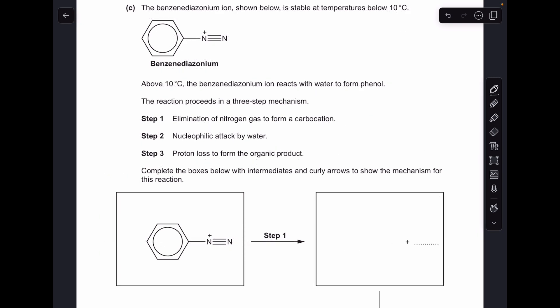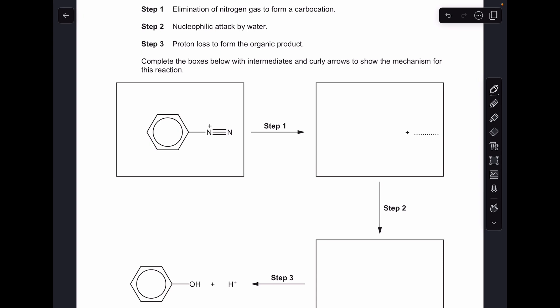And finally, the unfamiliar mechanism. So we've got some information about this benzene diazonium ion, and we've got some information about a three-step mechanism. So for step one, we've got to eliminate nitrogen gas and form a carbocation. So what's happened there is a pair of electrons in this bond has gone on to that N-plus, and that's obviously broken that carbon-nitrogen bond. And so there's your nitrogen gas product. And the remainder, this organic part, will have a positive charge on that carbon, and that's your carbocation.